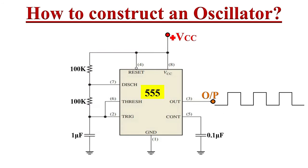Here is another oscillator circuit using a 555 timer IC. This circuit can produce square wave signals up to one megahertz. We will go into detail on how to construct various oscillator circuits in upcoming videos.